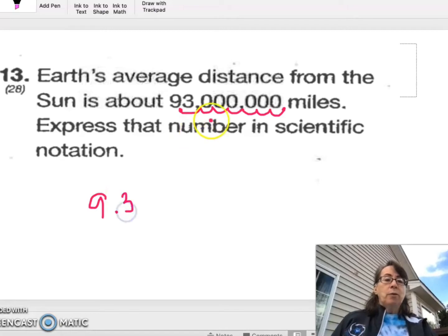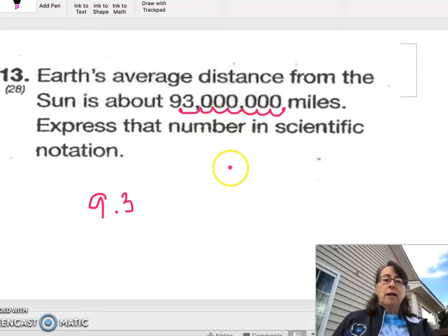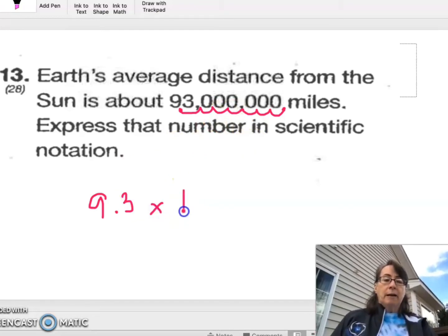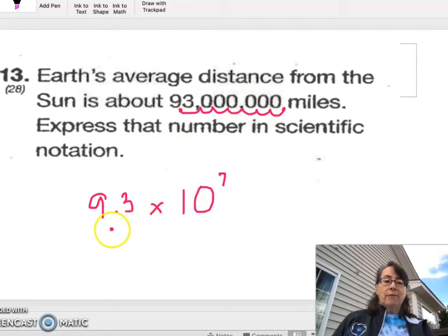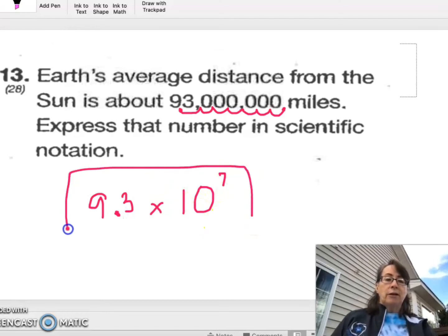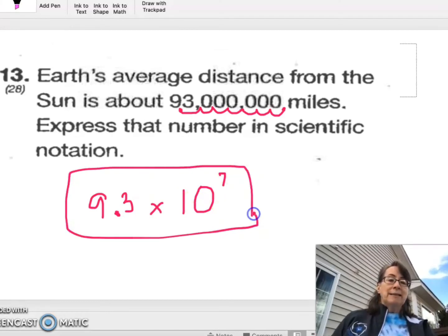And since we moved 7 to the left, that is a division by 10 to the 7th. So we must compensate by multiplying by 10 to the 7th. We divided by 10 to the 7th to get the decimal where we wanted it. And so to undo that, we multiply by 10 to the 7th because we always want our scientific notation to exactly represent the number we started out with.